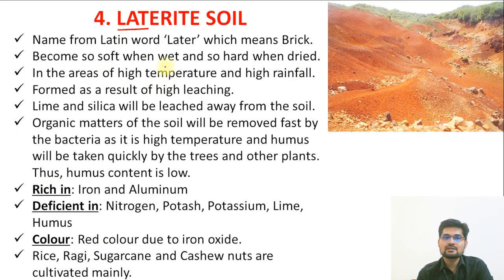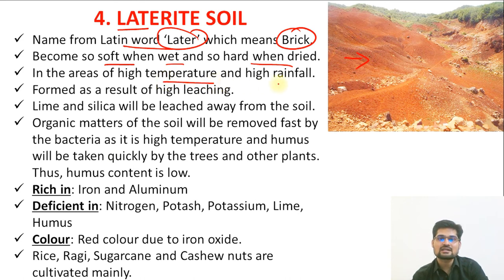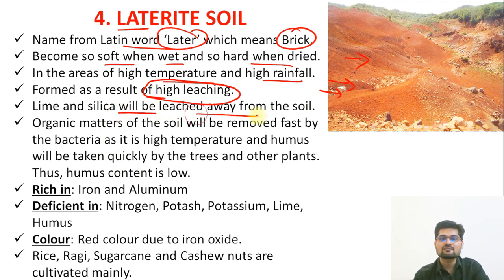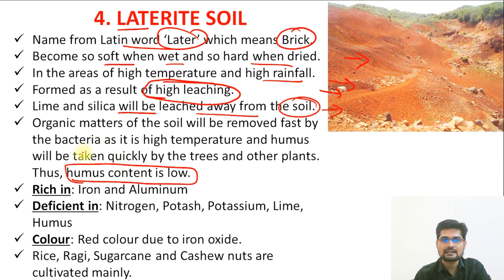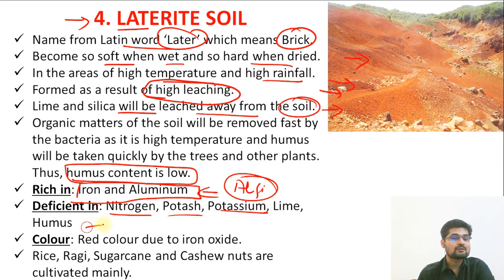The fourth type is laterite soil. The word 'laterite' comes from 'later,' meaning brick — it becomes soft when wet and very hard when dried. Found in areas of high temperature and high rainfall, these soils result from high amounts of leaching and do not have many nutrients. Lime and silica are leached away from the soil. Humus content is very low — the lowest. It is rich in iron and aluminium, so it relates to Alfisols in USDA classification. Deficient in nitrogen, potassium, lime, and humus.